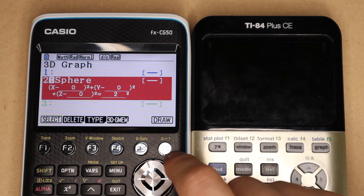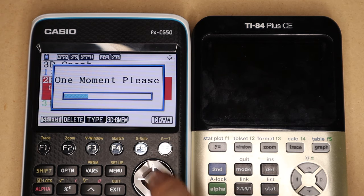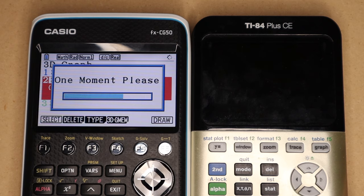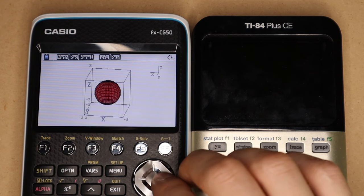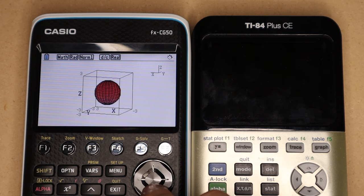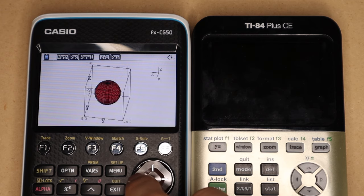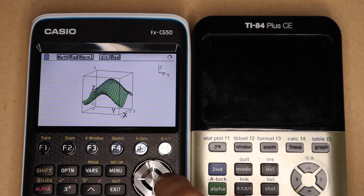Here is a simple sphere of radius 2. And you can see it takes a little while longer to load that up. But once it's in, again, you can spin it around without having to wait for it to regraph the shape.